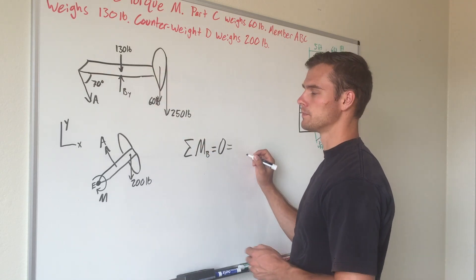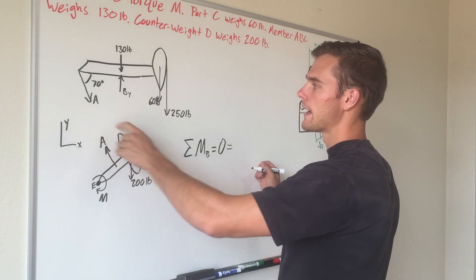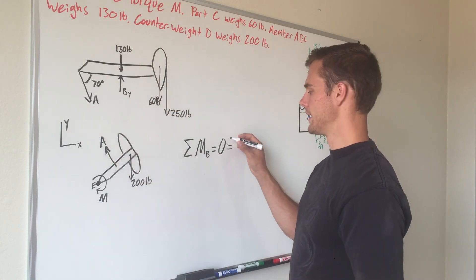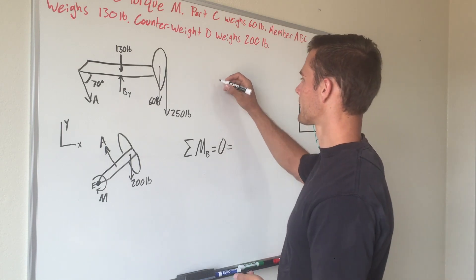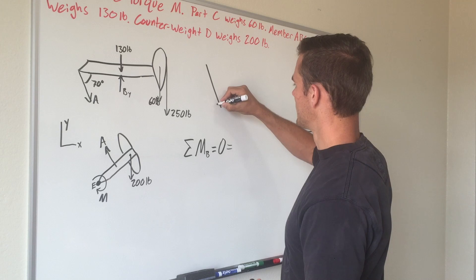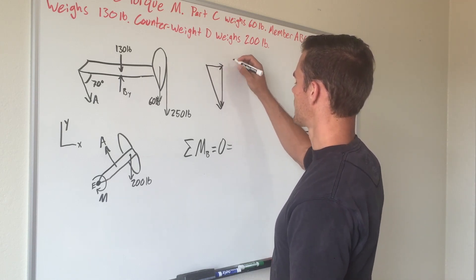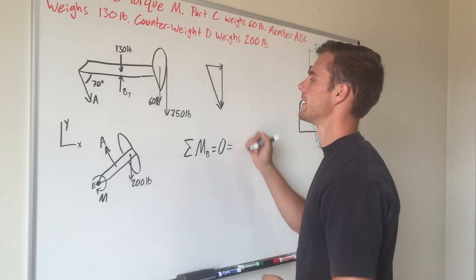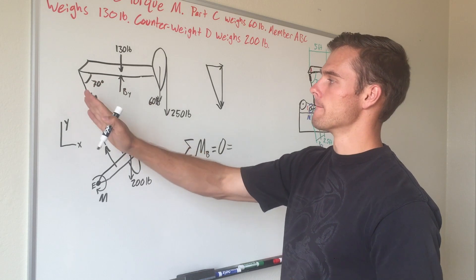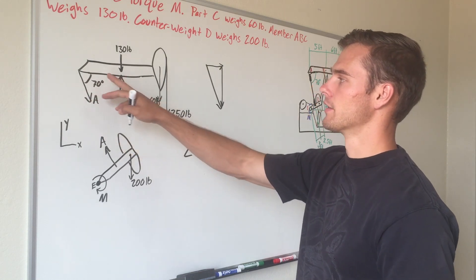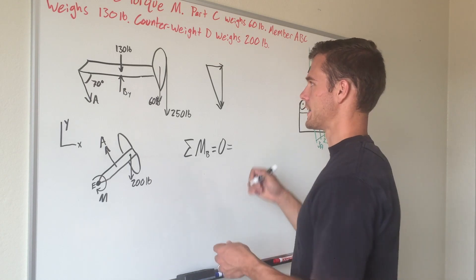Force A is going to cause counterclockwise rotation about point B, so we'll say it's positive. We can use its components to find the force that is perpendicular to its moment arm, which will cause rotation.